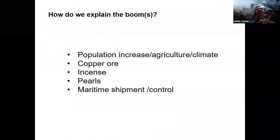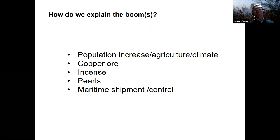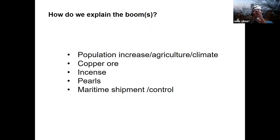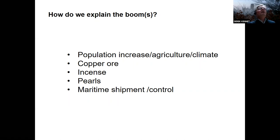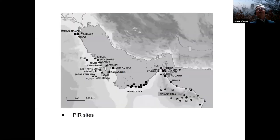Let's think about the ways in which we might explain all of this activity. I've come up with five possible things to explore: population increase, which would obviously be linked to agriculture and probably then to climate; copper ore, which is obviously an issue when we come to the Oman Peninsula; incense, which could potentially be important though we need to refocus the direction in some cases; pearls, a topic brought up by Rob Carter in his recent studies; and maritime shipment and control. So I'll run through those.